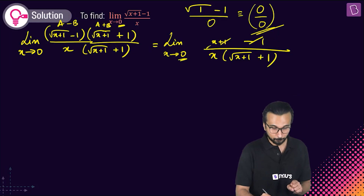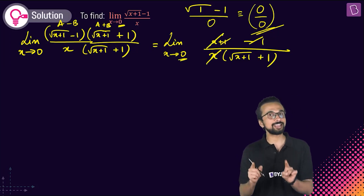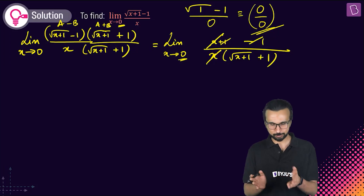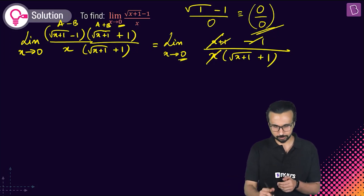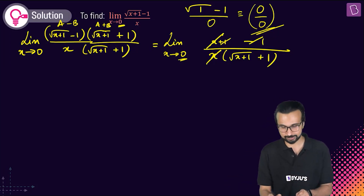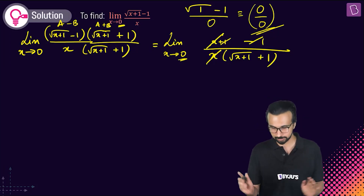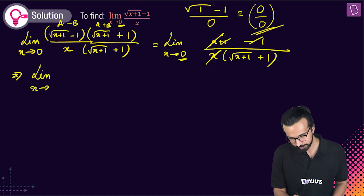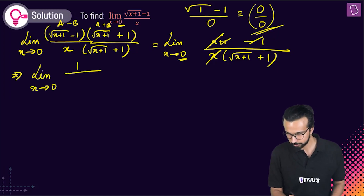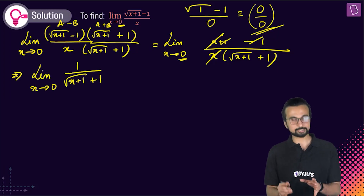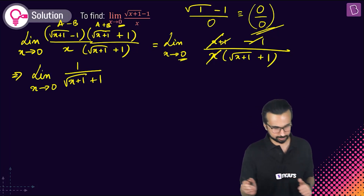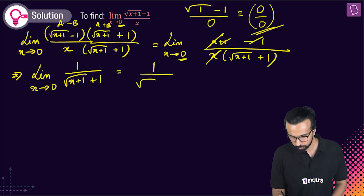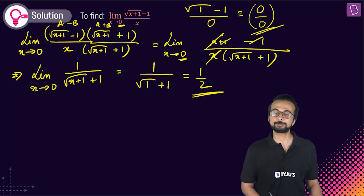Now you can see why we got zero by zero in the first place. Since x tends to zero but is not exactly zero, we can cancel x from numerator and denominator. We get limit x tends to zero of 1 divided by (root of (x+1) plus 1). Substituting x=0: 1 divided by (√1 + 1) = 1 by 2.